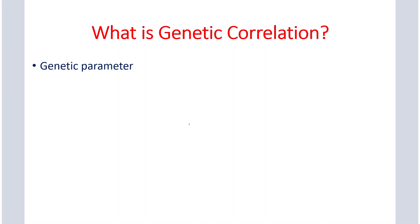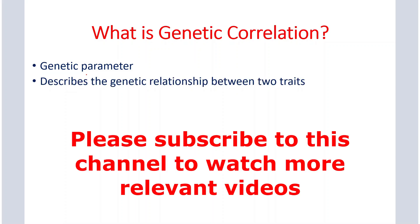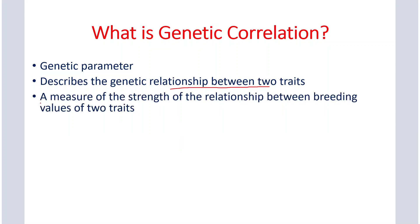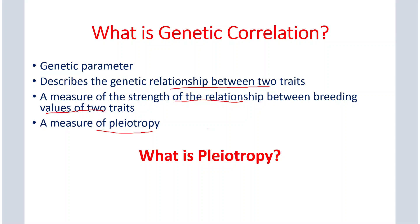Genetic correlation is a genetic parameter and it describes the genetic relationship between two traits. It tells us how much genetically two traits are related. We can define genetic correlation as a measure of the strength of the relationship between breeding values of two traits. We can also define genetic correlation as a measure of pleiotropy.